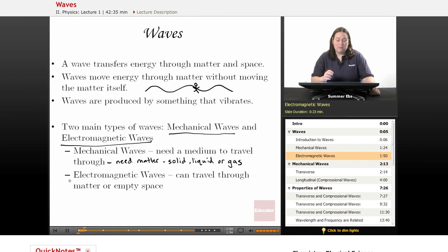Electromagnetic waves, the second main type, can travel through empty space and travel best through empty space. They can also travel through matter but travel more slowly. Mechanical waves must have matter and travel best through matter, while electromagnetic waves travel best through empty space.